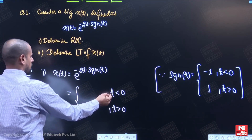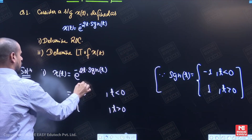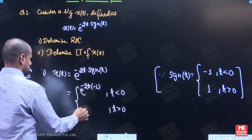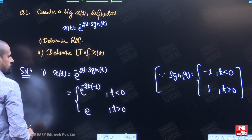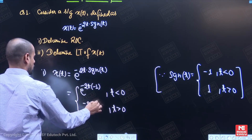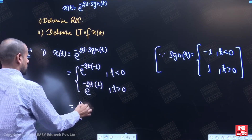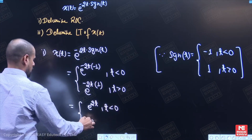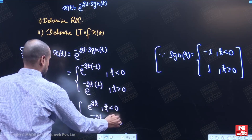For t less than 0, signum(t) is minus 1. So x(t) equals e to the power minus 2t into minus 1. For t greater than 0, signum(t) is 1. So the function is: x(t) equals e to the power 2t for t less than 0, and e to the power minus 2t for t greater than 0.